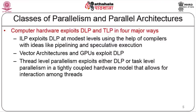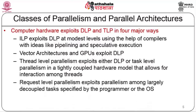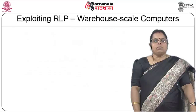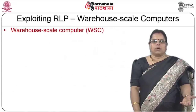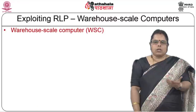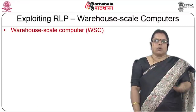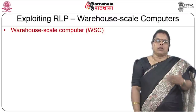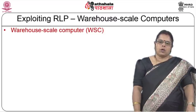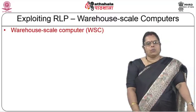Thread level parallelism exploits either data level parallelism or task level parallelism in a tightly coupled hardware model that allows interaction among threads. Request level parallelism exploits parallelism among largely decoupled tasks specified by the programmer or OS — for example, when a server caters to multiple transactions or multiple requests coming in.